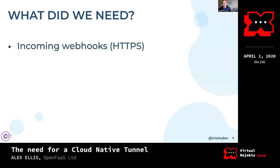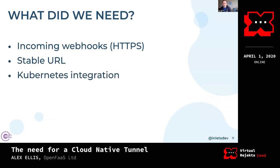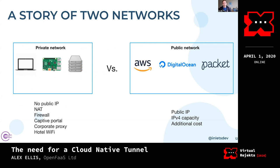We needed incoming webhooks — there are various reasons why you might want them. We needed a stable URL so we weren't constantly reconfiguring partner software with different URLs. We wanted a Kubernetes integration to get everything under one roof. It needed to be low cost, because we couldn't afford cloud. And it had to be easy to use — there's no point having something cheap with an awful user experience. That brings me to the story of two networks.